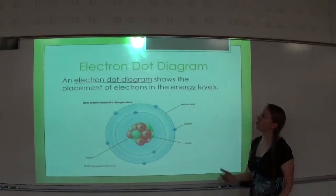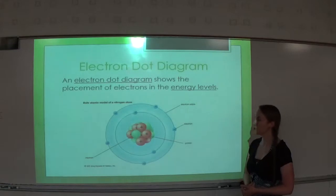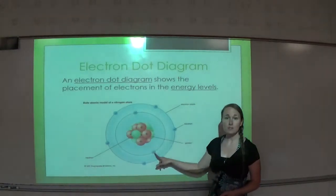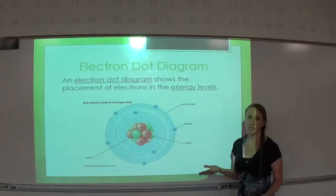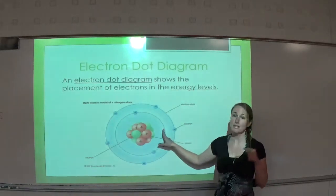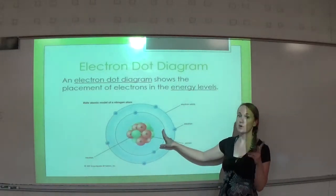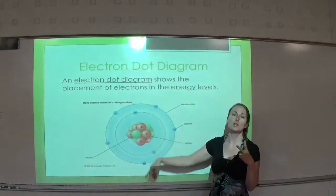An electron dot diagram shows the placement of electrons in the energy levels. We have two in the first one, and then we have one, two, three, four, five in the second energy level. I can't put a third one in the first energy level because it can only hold two electrons.